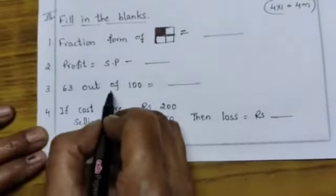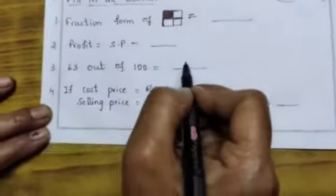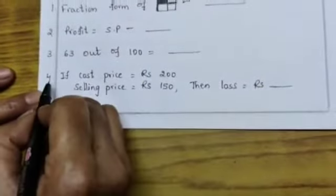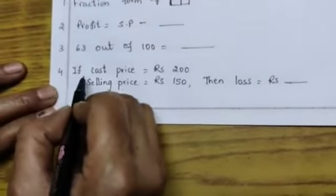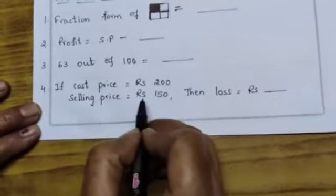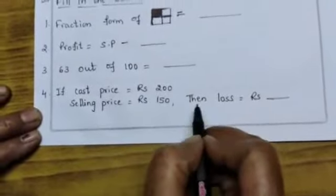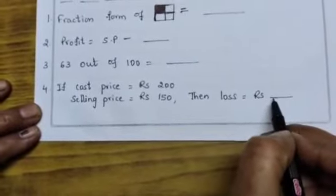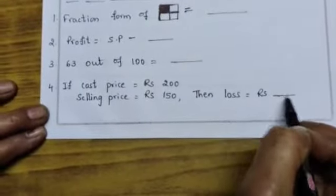Third bit, 63 out of 100, how will you write it in the blank? Fourth bit, if cost price is Rs. 200, selling price is Rs. 150, then loss is equal to how much? Write it in the blank.